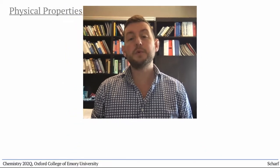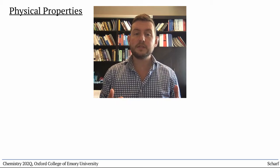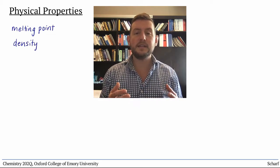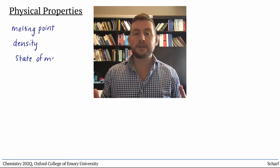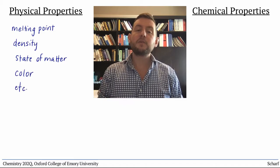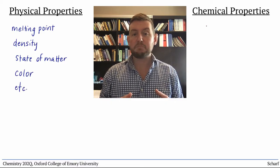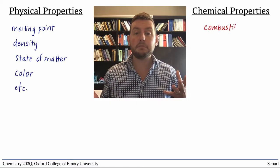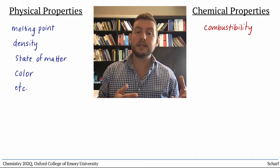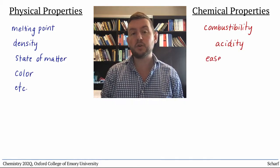In earlier chemistry courses, you probably learned to distinguish between the physical properties of a substance, like melting point, density, state of matter, color, from the chemical properties of a substance, like combustibility, or acidity, or how easily a substance corrodes.